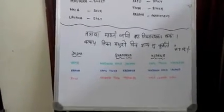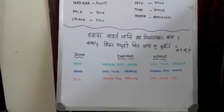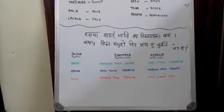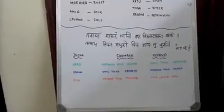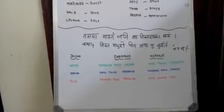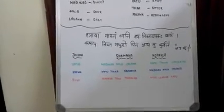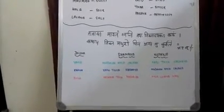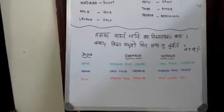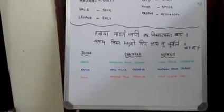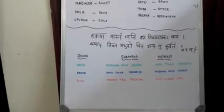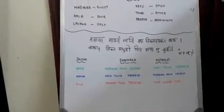Similarly, for paitika vyadis — for example, gastritis or amla pitta in Ayurveda — you can advise the patient to take Kashaya, Tikta, and Madhura rasa ahara dravyas. Even though you are giving medications which do shamana of pitta, ahara is also very important. So you can advise taking ahara that is predominant in these rasas.